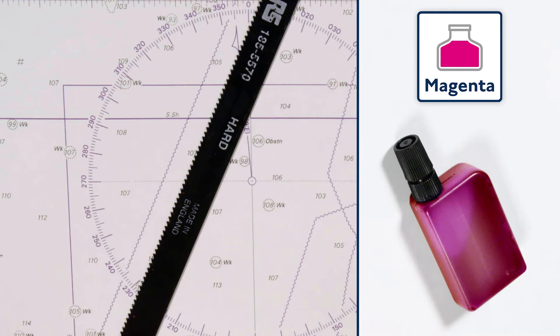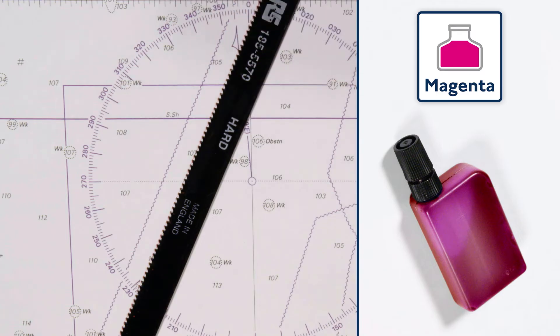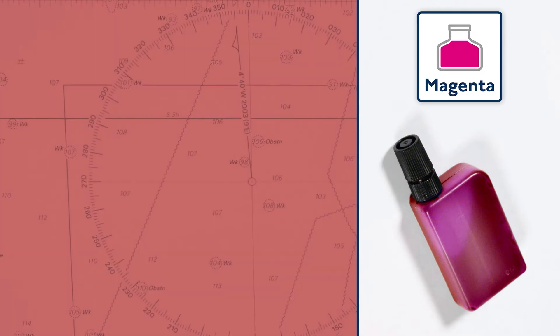Your pen must use violet or magenta ink, not blue, black or red. Red ink will disappear under the red lighting often used at night on board ships.